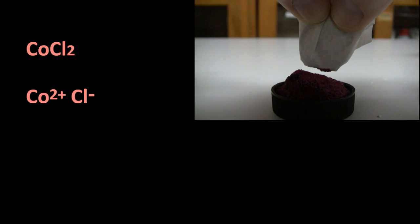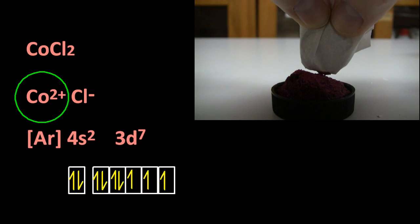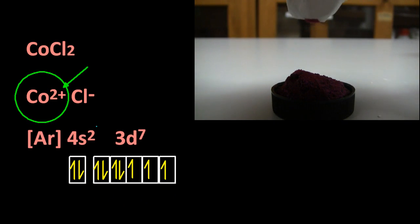Cobalt two chloride. Yep, that's magnetic too. Let me take off those two electrons to make it the cobalt two plus ion. Yep, it's got lone electrons there. It must be paramagnetic.